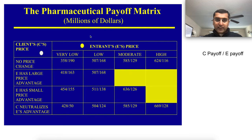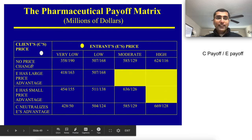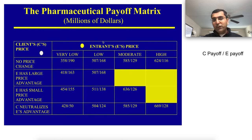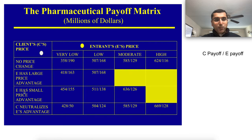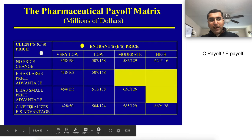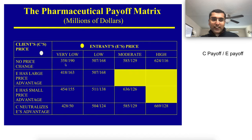These are all the price variations the entrant could take, and these are all the possible responses your client can make — no price change, allowing the entrant a large price advantage, a small price advantage, or neutralizing by matching their cost. You then create a payoff matrix showing the client's payoff versus the entrant's payoff for each combination. For example, when the entrant sets a very low price and your response is no price change, you make $358 million and the entrant makes $190 million.